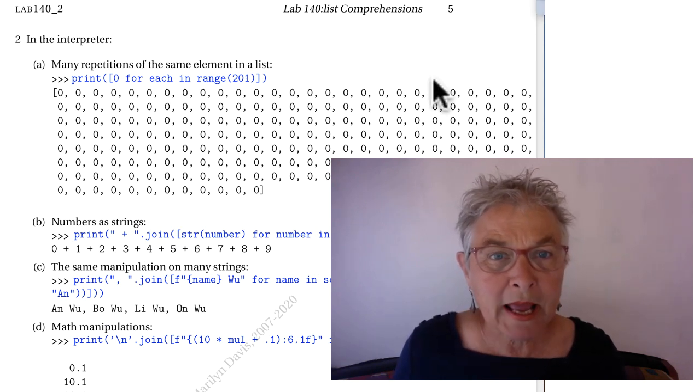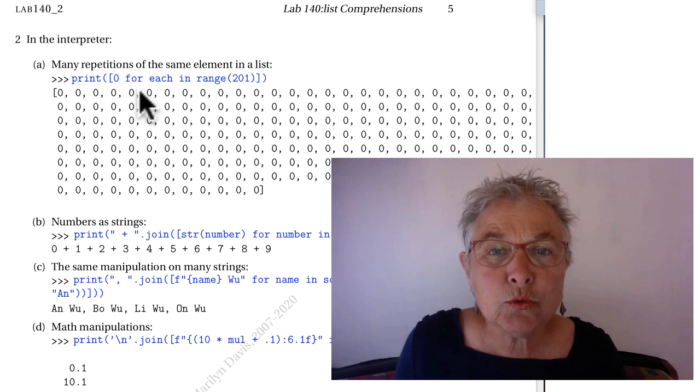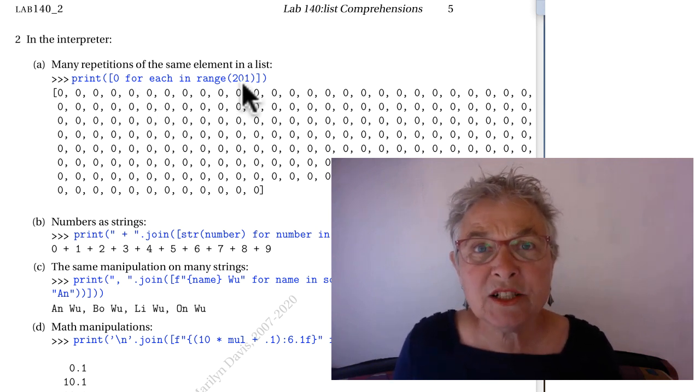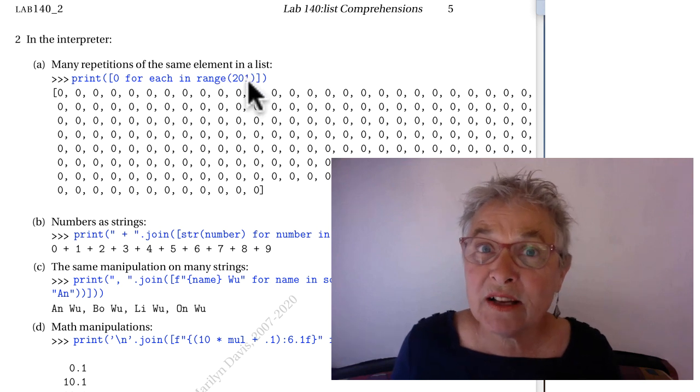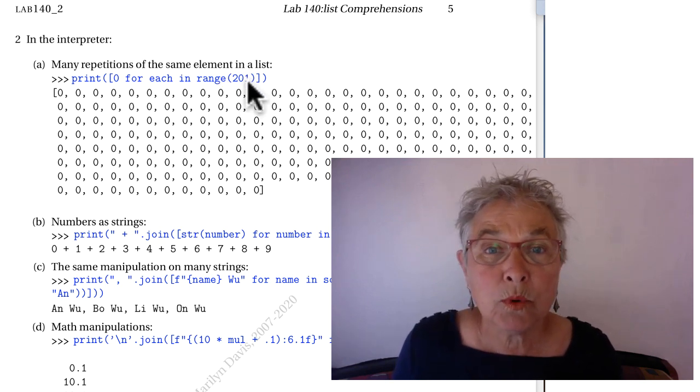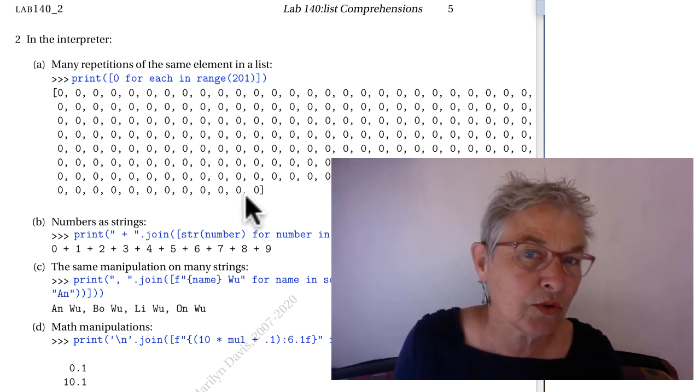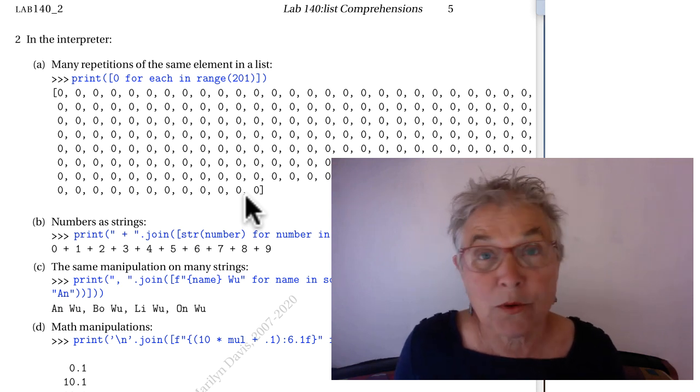The second one, for the A, we're supposed to do 201 zeros in a list. Well, I put in that one just to see if I can confuse you. Whatever number you put in that range, that's how many numbers come out. Starts with zero and doesn't go to the last one. But they're all zeros, so there we have 201 zeros.